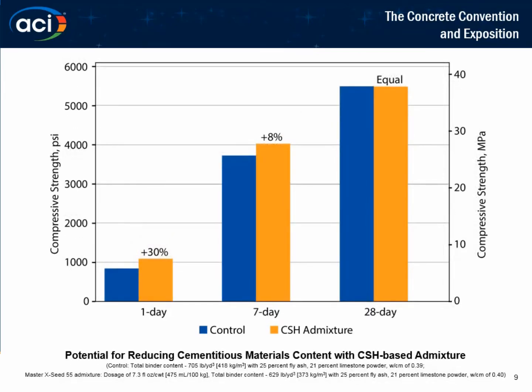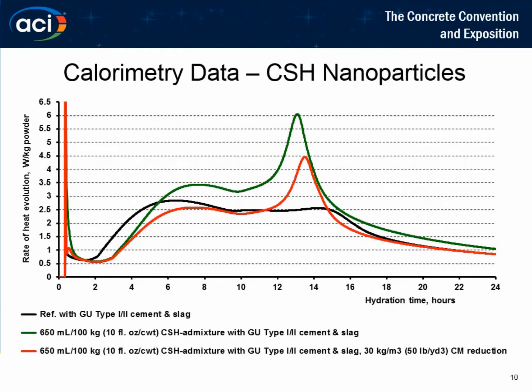You also have the opportunity with these nanoparticles to optimize a mix. This mix here is one of our GreenSense mixes — a highly optimized mix with high levels of fly ash, Portland cement, and limestone fillers. With this mix, we were able to remove 75 pounds of total cementitious material, include these CSH nanoparticles, and achieve better early strength and equivalent ultimate strength. These CSH nanoparticles are clearly increasing overall cement hydration, which is visible in the compressive strength data.